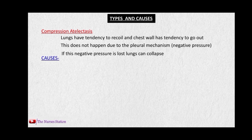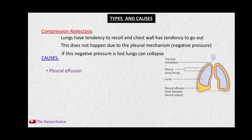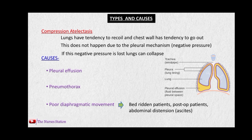But if this negative pressure is lost or reduced, the lungs can collapse. The causes include pleural effusion, which is the accumulation of fluid in the pleural space; pneumothorax, which is the accumulation of air in the pleural space; or poor diaphragmatic movement, like in bedridden patients, post-operative patients, or due to abdominal distension such as ascites. All these conditions lead to loss of negative pressure in the pleural space, due to which the lungs can collapse and produce atelectasis.